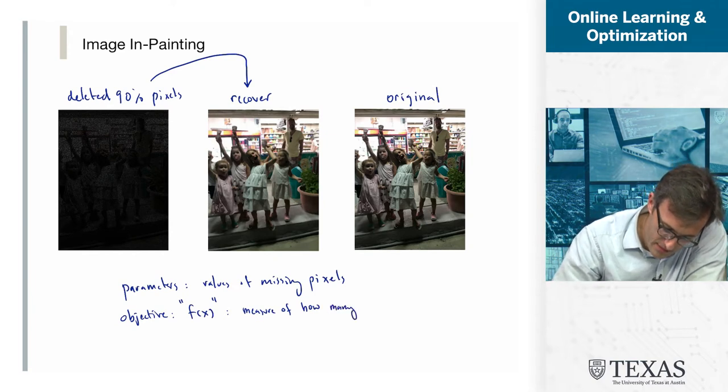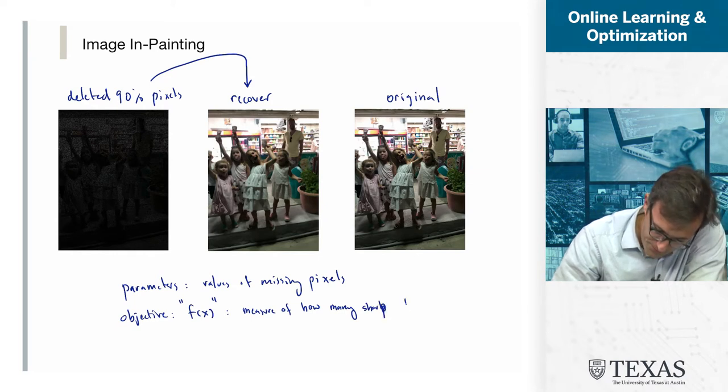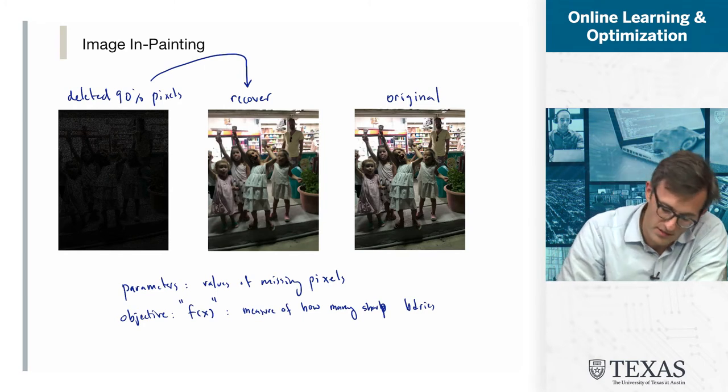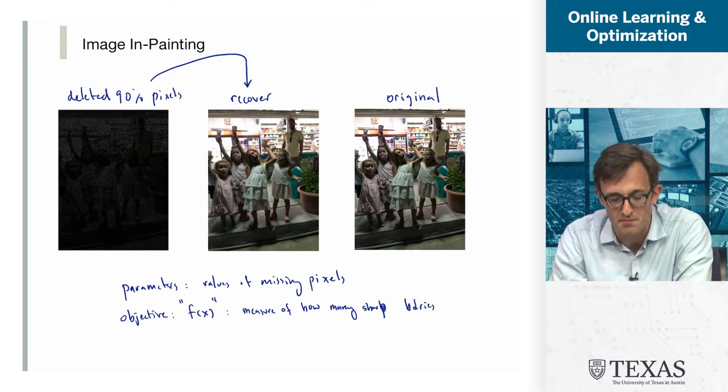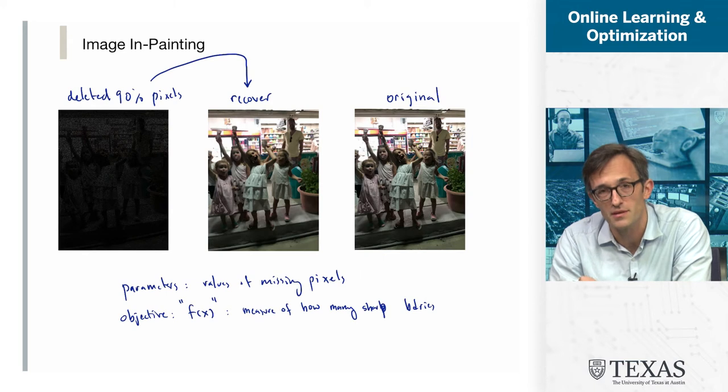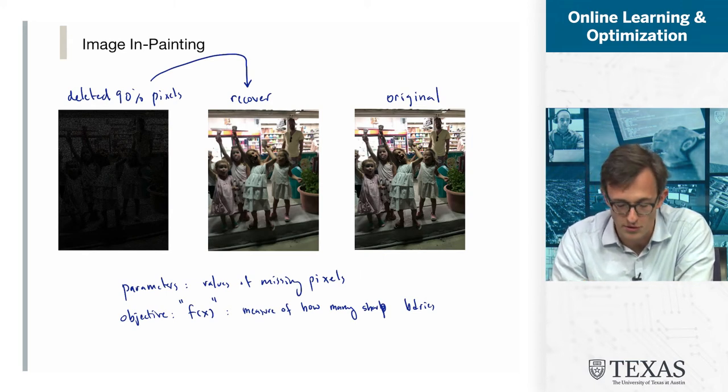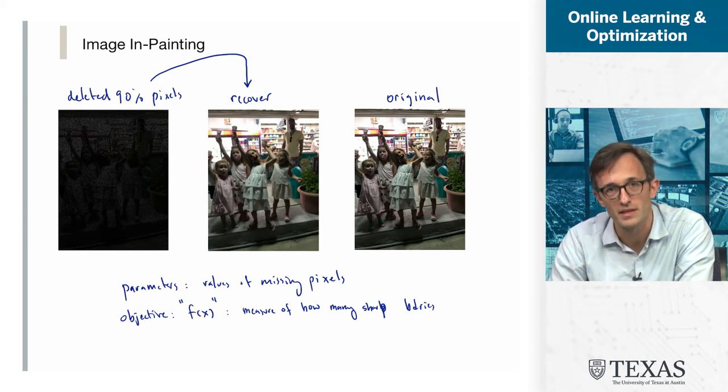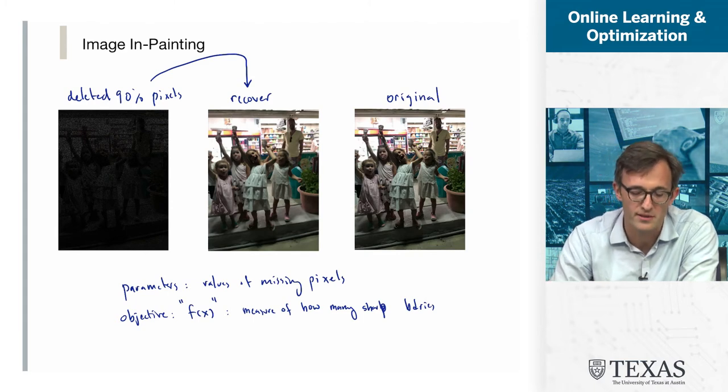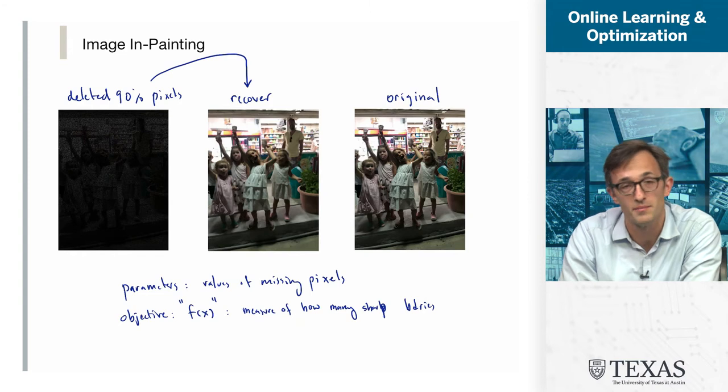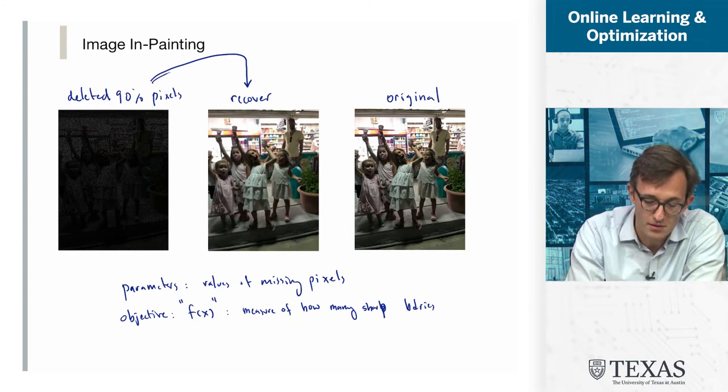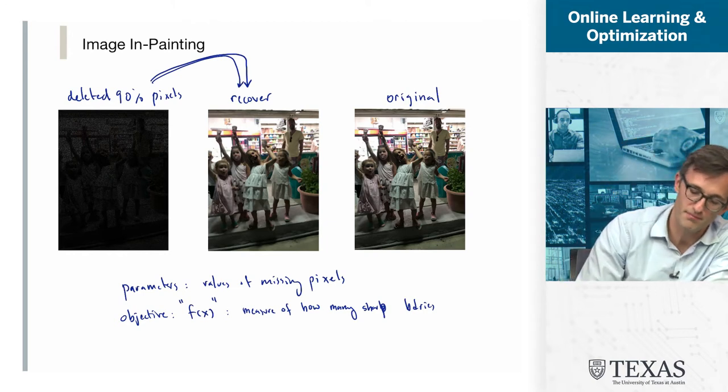And the objective, in other words the function f of x that I'm trying to make as small as possible, is a measure of how many sharp boundaries I have. So if you think about random noise, if you have random black and white pixels, the probability of a black pixel being surrounded by white pixels is very very high. But if you look at any single patch, even an intricate patch of this picture, you'll see that it's very likely most pixels are surrounded by pixels that are either exactly the same color or very close in color. So in other words, there are not that many sharp boundaries as you would have just by filling in the pixels in an arbitrary fashion. And just this little tidbit, just this piece of information from the application domain of images, natural images, is enough in order for us to build an optimization algorithm that goes from here to the recovered image. And this is called image in-painting.